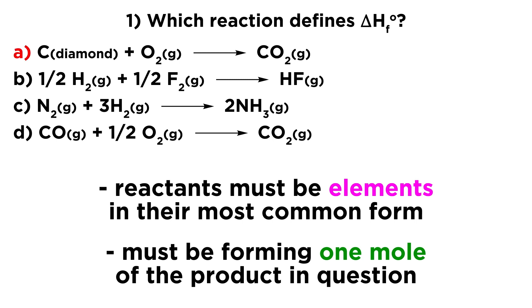So looking at option A, what do we notice? Well, we see that carbon is in the diamond allotrope. And the problem is that diamond is not the standard state of carbon. It is not the most common allotrope of carbon. We would expect to see charcoal there. So this one is actually not going to work because of the word diamond there. That doesn't comply with the definition.